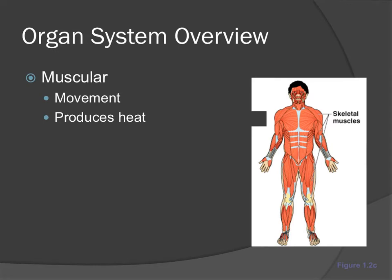The muscular system consists of our muscles — that's the anatomy — and its physiology includes movement and producing heat. The primary job of muscles is to move the bones of the skeleton. Muscle also makes the heart beat and makes up the walls of other important organs such as the stomach, intestines, and blood vessels. Cardiac muscle, found only in the heart, is responsible for pumping blood throughout the body.